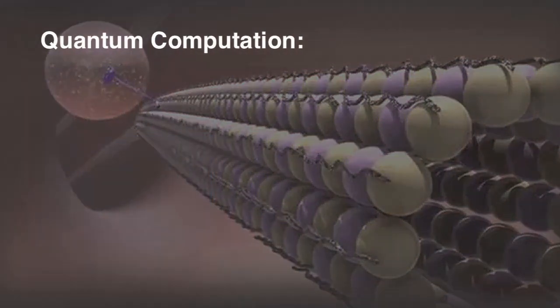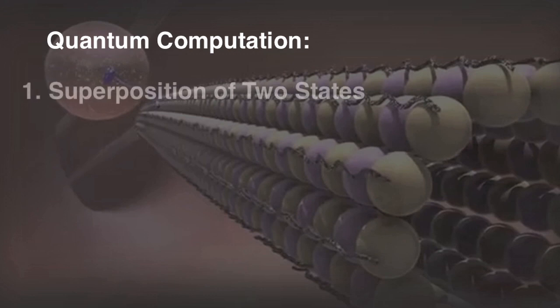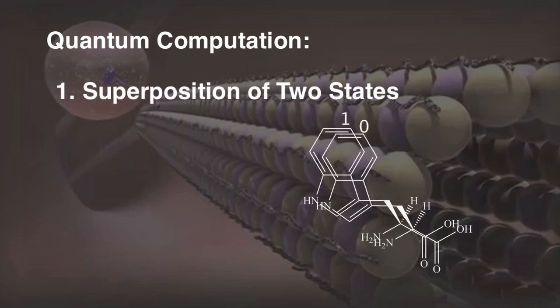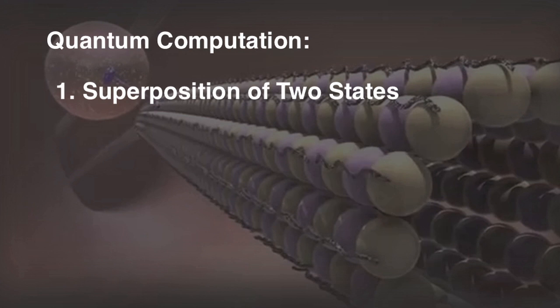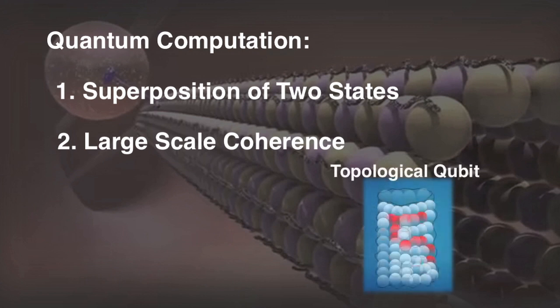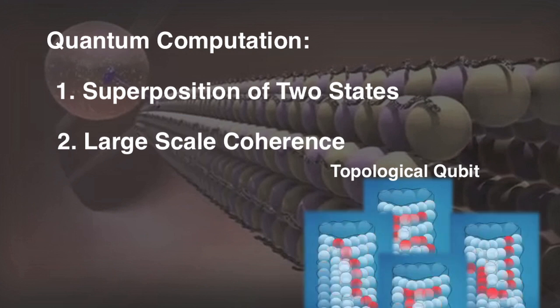The two requirements for quantum computation are superpositions of two states, which allows molecules to represent qubits, and large scale coherence. We have seen how this could occur in tryptophan molecules. Large scale coherence occurs among thousands of tryptophan molecules at the same time. Because microtubules are so close to each other in the human brain, large scale quantum coherence could be shared between thousands of microtubules.